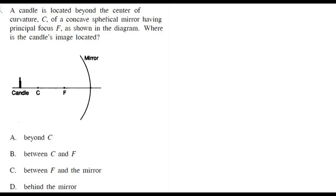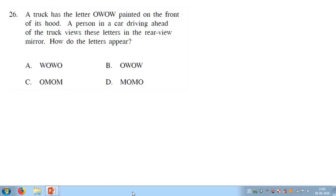This is problem number 25. A candle is placed beyond C in a concave mirror. A very small image between F and C, but real and inverted, would be formed. So the correct answer is between C and F.